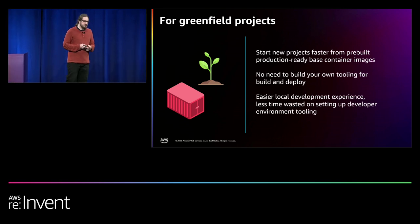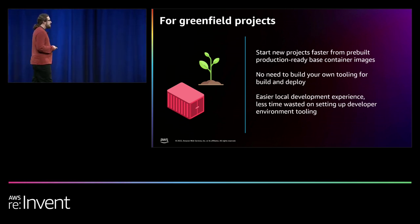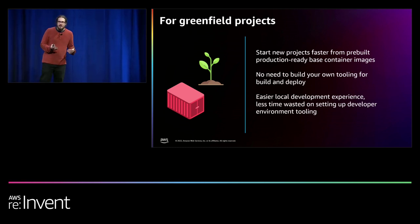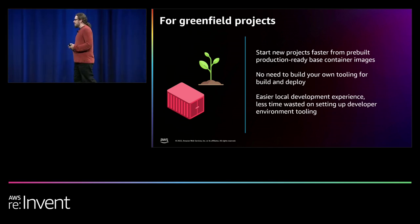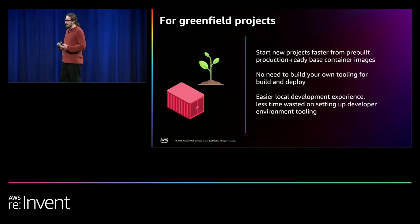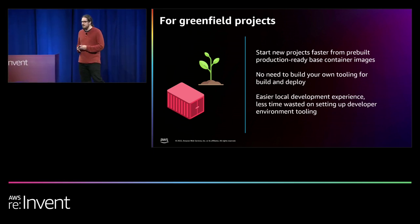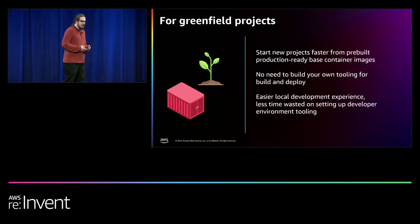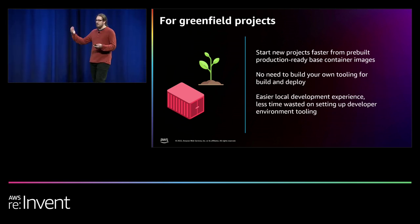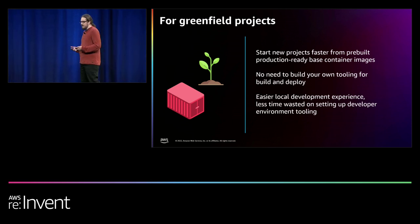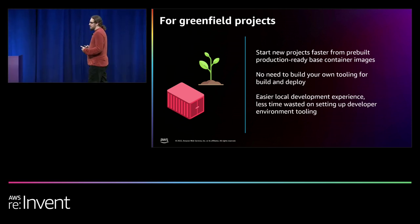For a greenfield project, a container is going to get you started a lot faster. There are literally millions of pre-built container images on Docker Hub, and many of those are production-ready — patched and maintained by core teams that develop runtimes themselves, like the Python core team or Node.js core team. They've built a production-ready pattern for distributing a particular runtime, and all I have to do is pull that off Docker Hub and start developing on top of it.